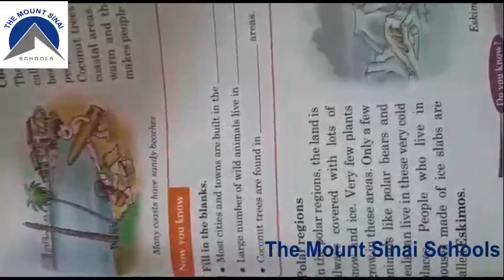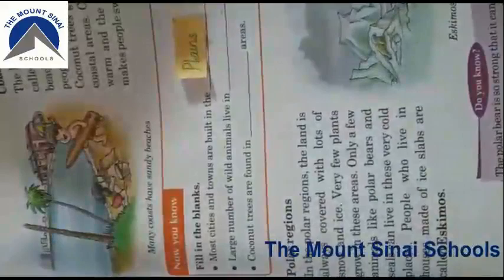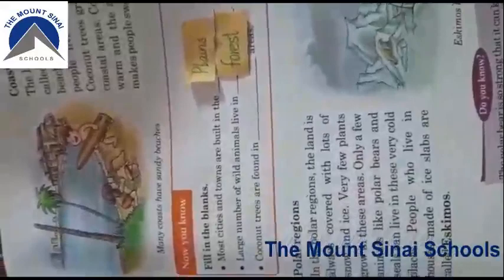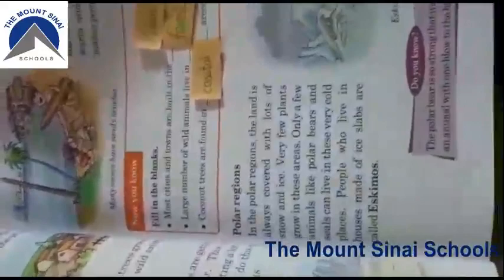The first blank: most cities and towns are built in plain areas. The second: a large number of wild animals live in forests. The third: coconut trees are found in coastal areas. If you read the reading properly, you can easily find these answers.